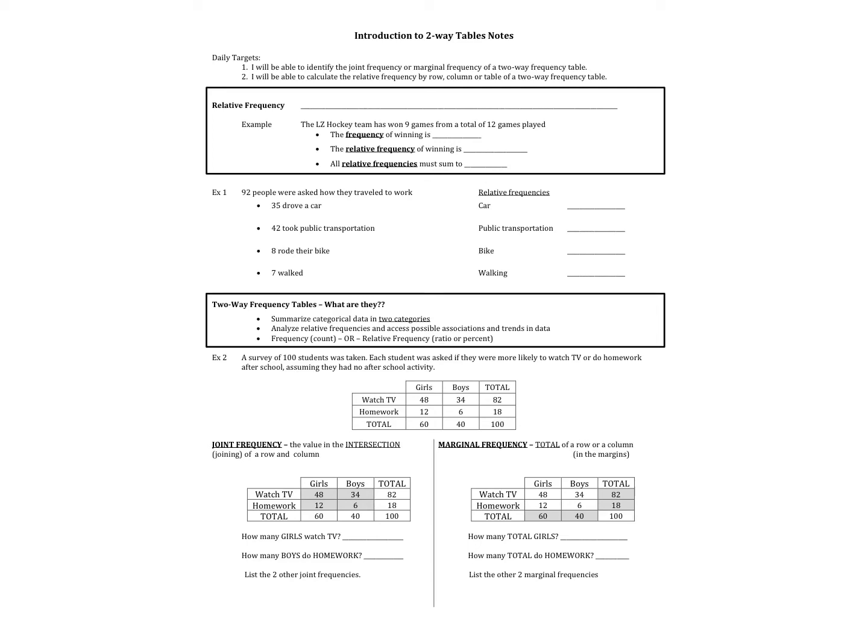Hello, welcome to this lesson. Although this says introduction to two-way tables, we are kind of reinforcing what we've learned about two-way tables and relative frequencies. So the learning objectives for this lesson are to be able to identify the joint frequency or the marginal frequency of a two-way table, and also be able to calculate the relative frequency by row or by table of a two-way frequency table. So we're going to be taking what we've learned over the past couple days and just reiterating it, making sure we have a solid understanding of two-way tables and their relative frequencies.